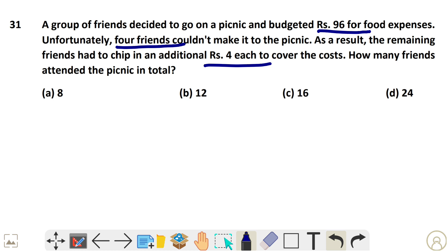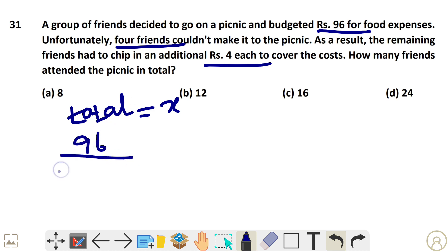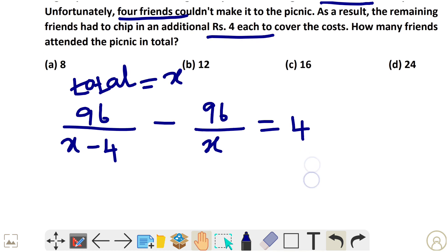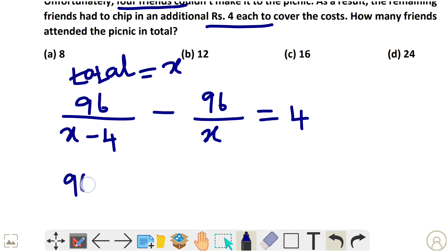We don't know the total group of friends, so let that be x. The amount each person pays is 96 divided by x. Since four friends couldn't make it, the remaining friends paid 96 divided by (x minus 4). The difference in cost is 4 rupees each.